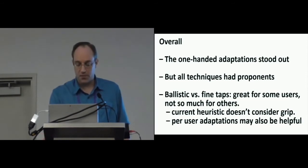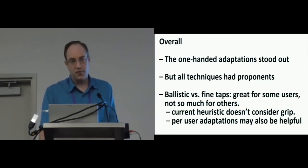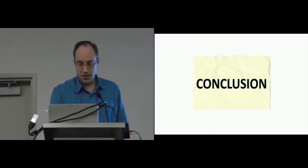Overall, these one-handed adaptations stood out, but all the techniques sort of had people who liked them. In fact, it was sort of a spread, like there was no one technique that sort of universally stood out. The one problem here we found is that, particularly with this idea of separating the ballistic from fine taps, we found that the way we're doing that right now is great for some users and for other users it basically didn't work very well at all. And partly that's because the current heuristic we're using does not consider the grip, which we kind of realized after the fact when we're kicking ourselves, but in the actual user test people were using it both ways. So if you use it with your thumb, for example, it just wasn't tuned for that. And we also feel that per-user adaptations may be helpful.